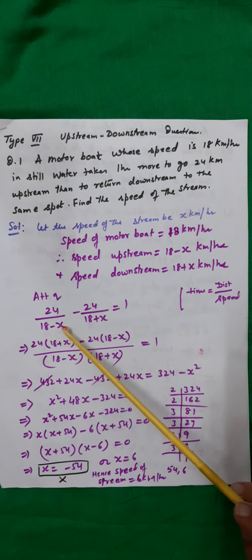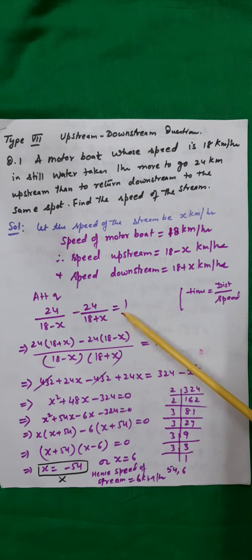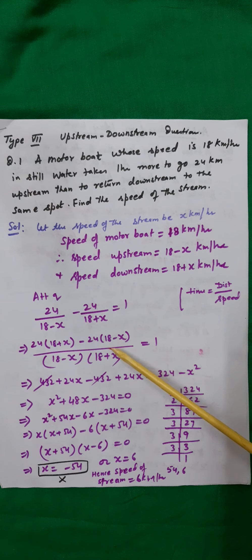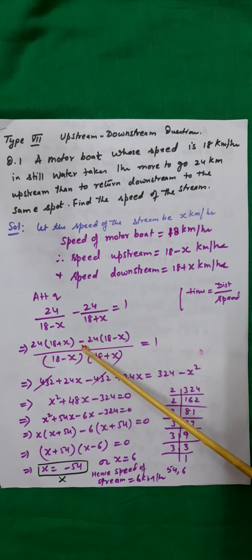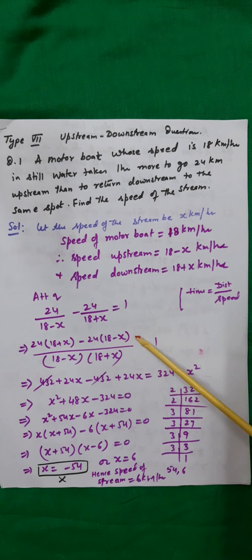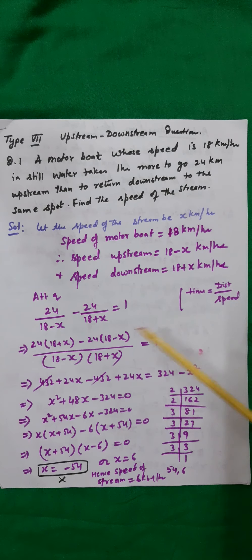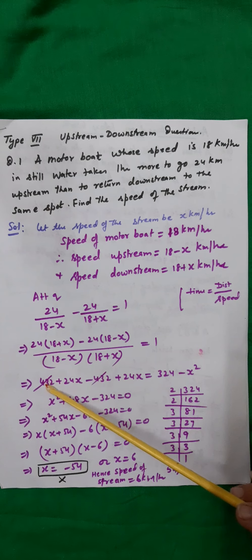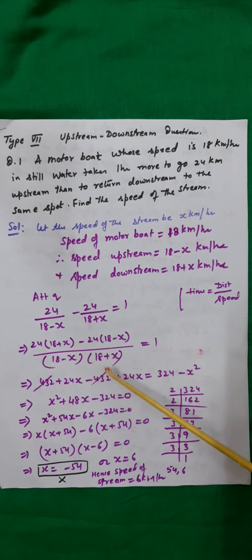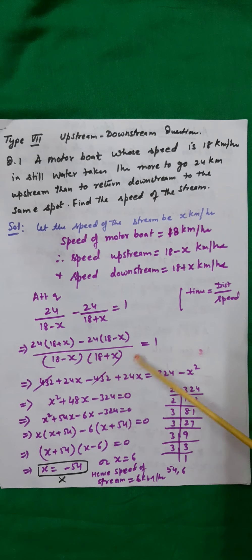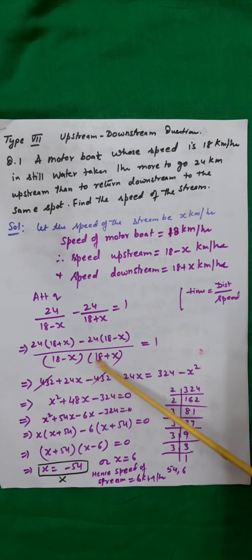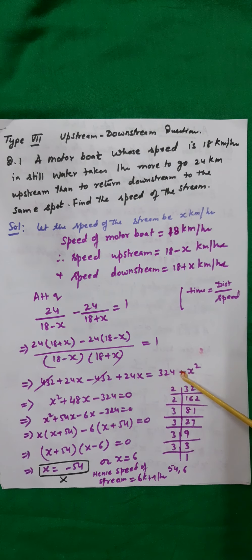I would suggest don't rush to write the equation — give it a thought for a few seconds and then write with understanding. Now we apply our usual butterfly method: 24(18 plus x) minus 24(18 minus x) upon (18 minus x)(18 plus x) equals 1. This gives 432 plus 24x minus 432 plus 24x equal to 324 minus x squared, applying the a squared minus b squared identity.